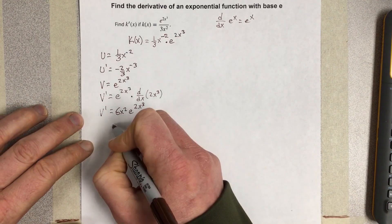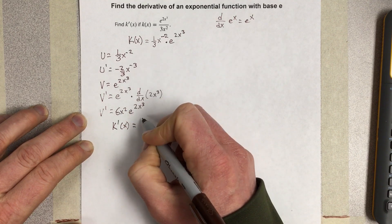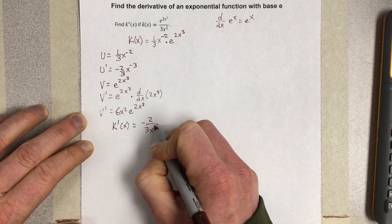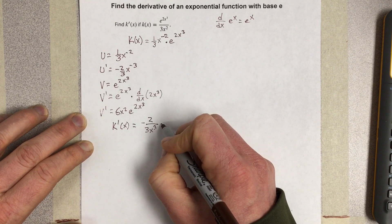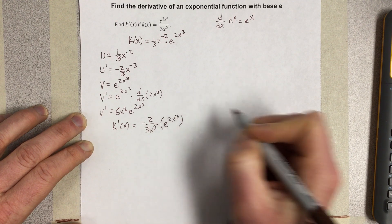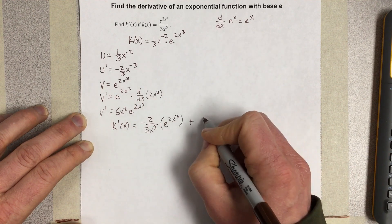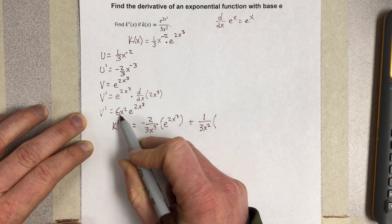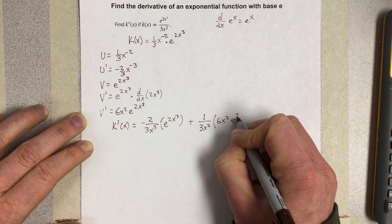Now we can apply the product rule: k prime of x equals u prime times v, so we get negative 2 over 3x cubed times e to the 2x cubed, plus u times v prime, which is 1 over 3x squared times 6x squared times e to the 2x cubed.